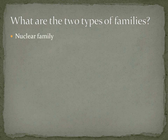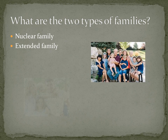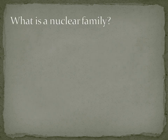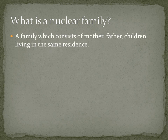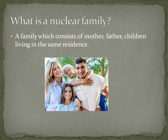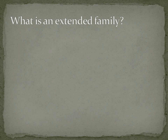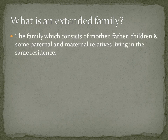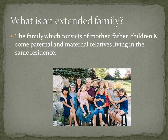What are the two types of families? The first one is nuclear family and the second one is extended family. A nuclear family consists of mother, father, and children living in the same residence. An extended family consists of mother, father, children, and some paternal and maternal relatives living in the same residence — including uncles, aunts, grandfather, and grandmother.